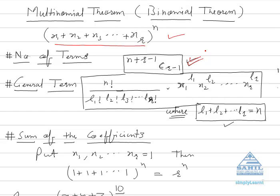The second thing being asked in this kind of question is the general term. What is the general term of this expansion? It is n factorial upon l1 factorial, l2 factorial, l3 factorial, up till lr factorial — into the corresponding variables raised to those powers. The condition is that l1 plus l2 plus l3 up till lr must equal n.